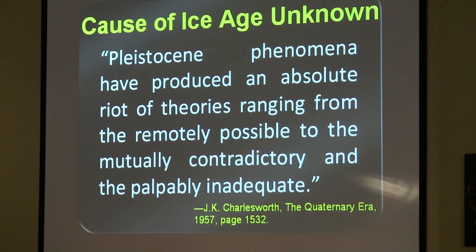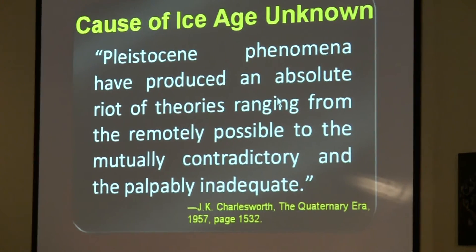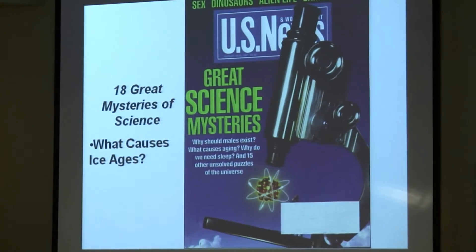J.K. Charlesworth, in his book The Quaternary Era — 'quaternary' meaning ice age, as does 'Pleistocene' — said in 1957 on page 1,532 of that 1,600-page two-volume work: 'Pleistocene phenomena have produced an absolute riot of theories.' These range from the remotely possible to the mutually contradictory and the palpably inadequate. At that time there were about 60 theories on the cause of the ice age — as many as there are theories for dinosaur extinction, about 100 now. And that was 1957. We're in modern times, we know so much more... right?